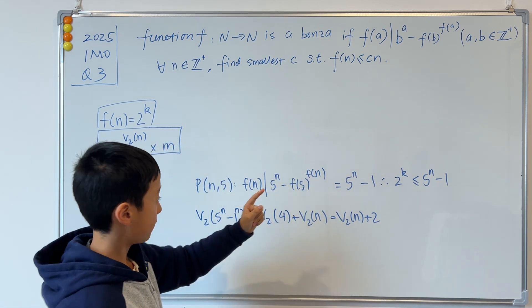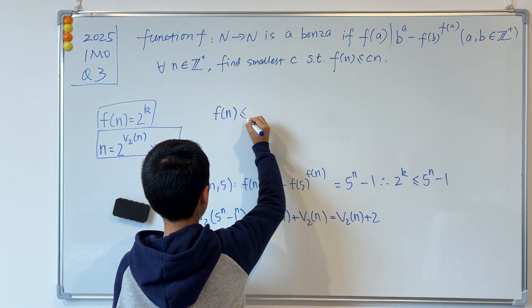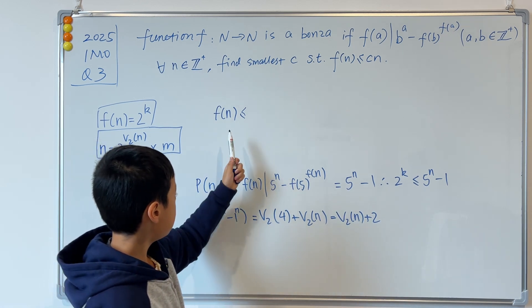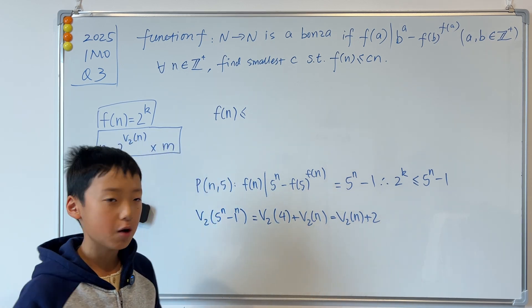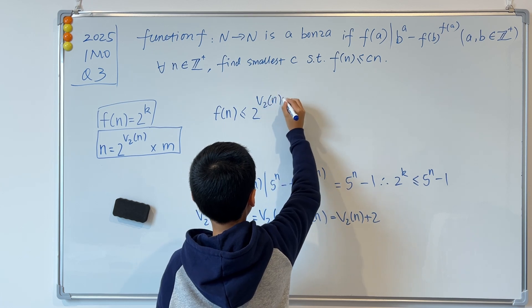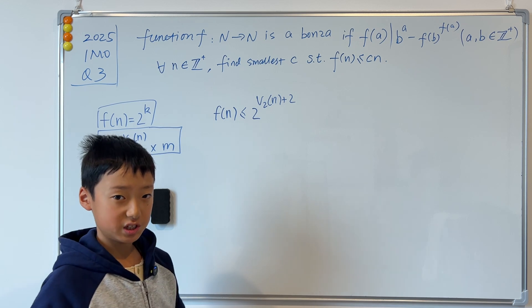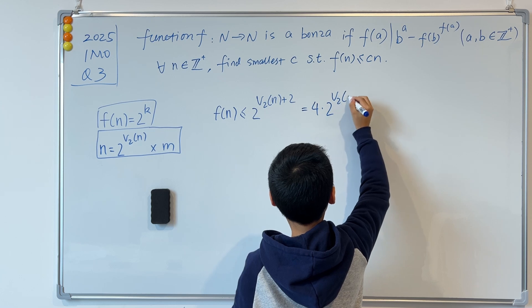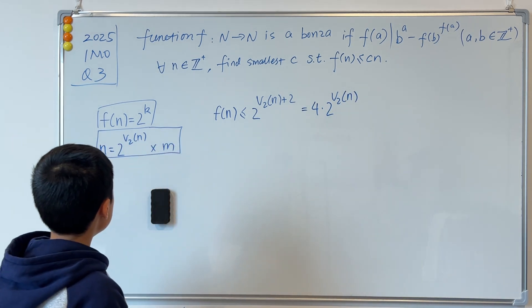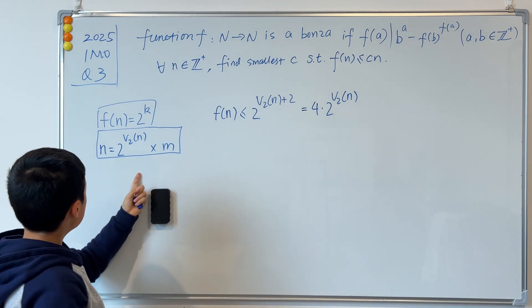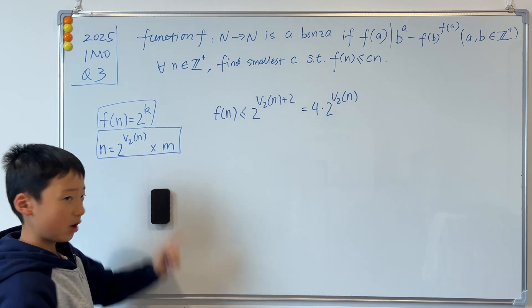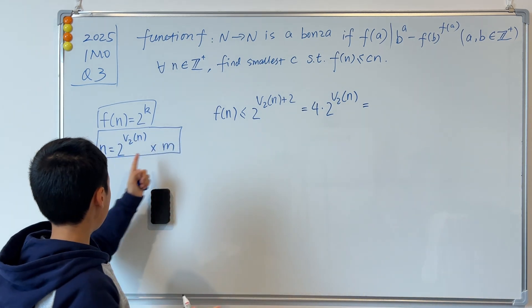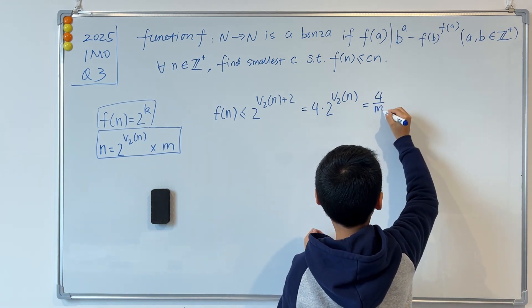So instead of writing 2^k I'll write f(n) ≤ 2^(v_2(n) + 2). Splitting the exponent, this is 4 · 2^(v_2(n)). We know that 2^(v_2(n)) = n/m, so this is 4 · (n/m), which I'll write as (4/m) · n.